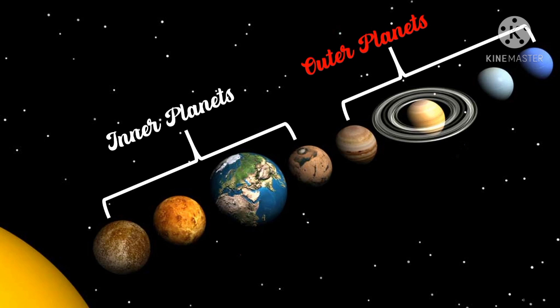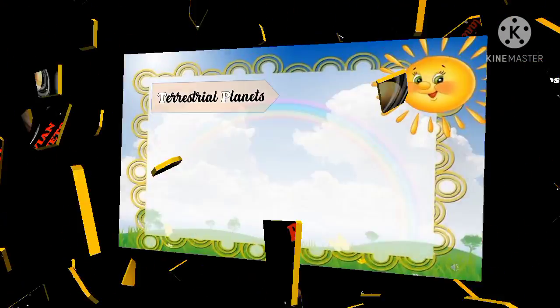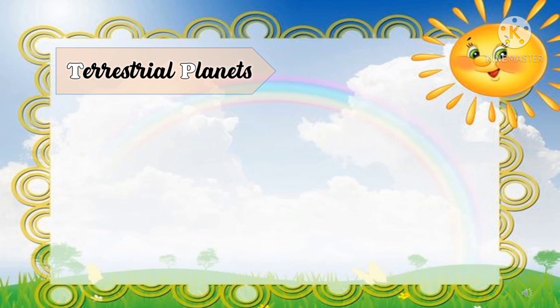Inner planets are those four planets closer to the sun, and the outer planets are those planets farther from the sun. Inner planets are also called terrestrial planets, while the outer planets are also called Jovian planets. Let us know more about these planets.